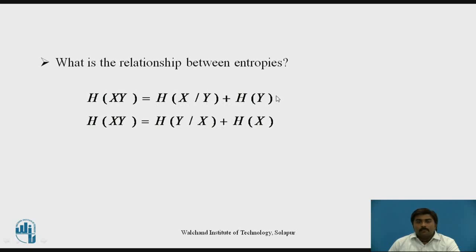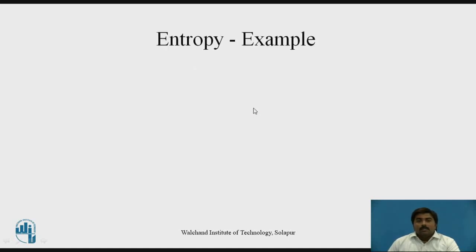There are two equations. If you consider x as a source, then the conditional entropy is H(y|x). If you consider y as a destination, the conditional entropy is H(x|y). So you can find the joint entropy in both cases if you know the conditional entropy and the source and destination entropies. In this session, we are going to study different examples.